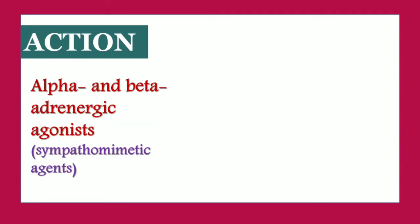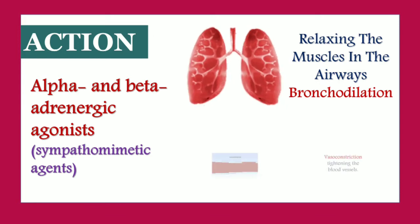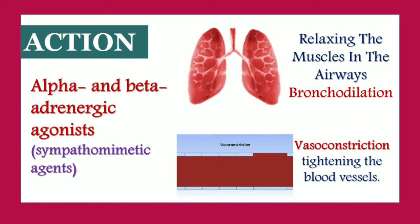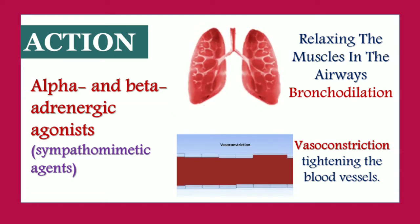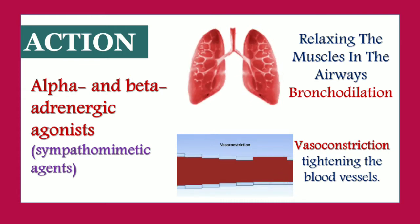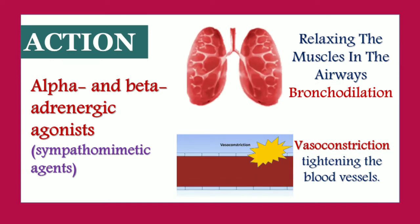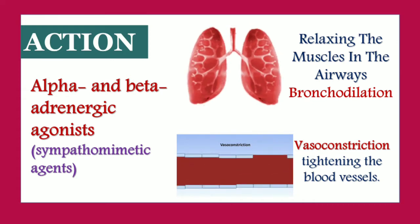Let's see about the action of Adrenaline. It is an alpha and beta-adrenergic agonist, i.e., a sympathomimetic agent. It helps in relaxing the muscles in airways — bronchodilation — and vasoconstriction, tightening the blood vessels. Other key actions include increasing the heart rate, increasing blood pressure, enlarging the pupil in the eye, redistributing blood to muscles, and altering the body's metabolism to increase blood glucose level, primarily for the brain.